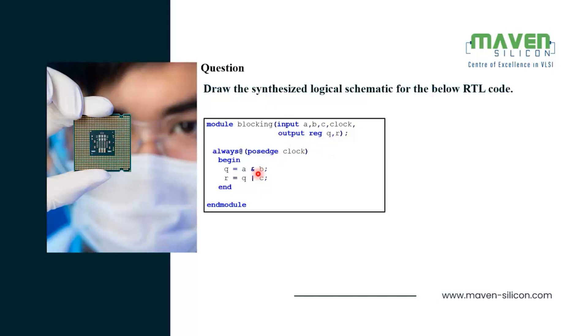It has an always process with a positive edge triggered clock. The outputs are assigned using blocking assignments. You can see here where Q equal to A and B and R equal to Q or C.